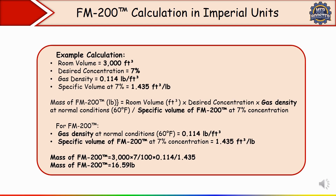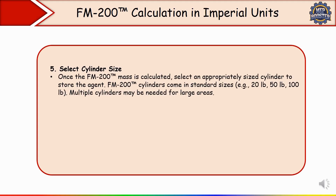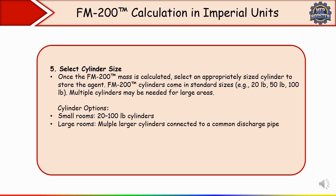Once the mass of FM 200 is calculated, the next step is to select the cylinder size. FM 200 cylinders come in standard sizes in the market like 20 pounds, 50 pounds, and 100 pounds. Multiple cylinders may be needed for large areas. For small rooms, normally 20 to 100 pound cylinders are used. For large rooms, multiple larger cylinders are connected to a common discharge pipe. In our calculation, we got approximately 16.59 pounds, so we need to select a 20-pound cylinder size.